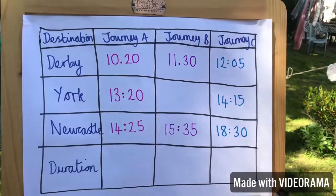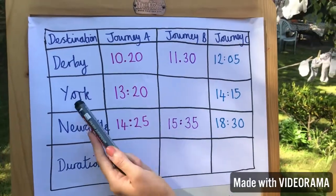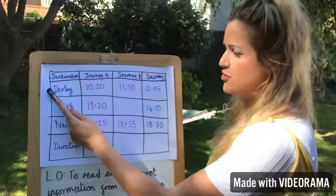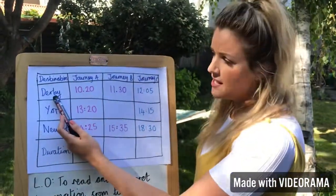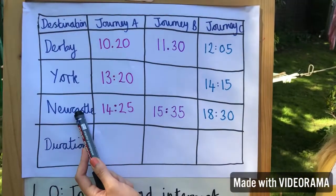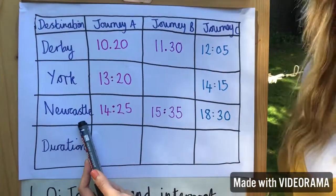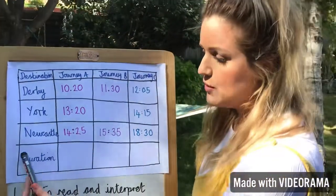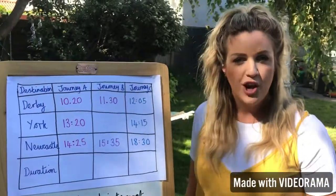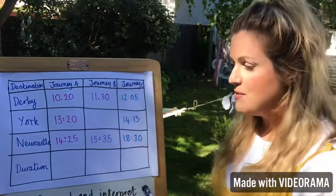'Destination' means the station or the place. You can see here that the train starts in Derby, travels to York, and then ends up in Newcastle — that is the end of the train journey. We've got the word 'duration' at the bottom. Hopefully you remember what duration means: it means how long something takes.